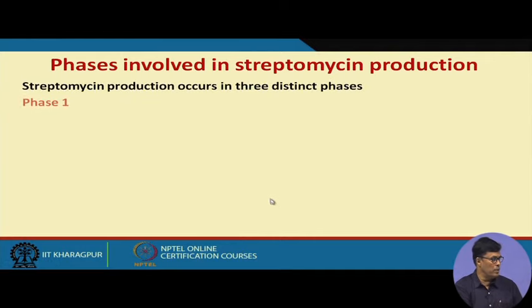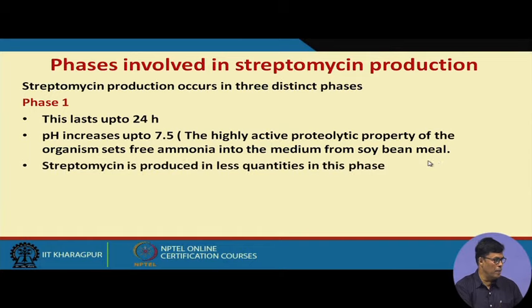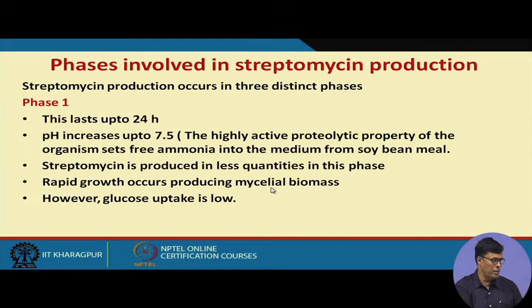Several phases are involved in streptomycin fermentation. Phase 1 lasts for 24 hours, during which pH increases to 7.5 due to the highly active proteolytic activity of the organism releasing ammonia from the soybean meal into the media. Streptomycin is produced in lesser quantities at this phase, rapid growth occurs to produce mycelial biomass, and glucose uptake is low.